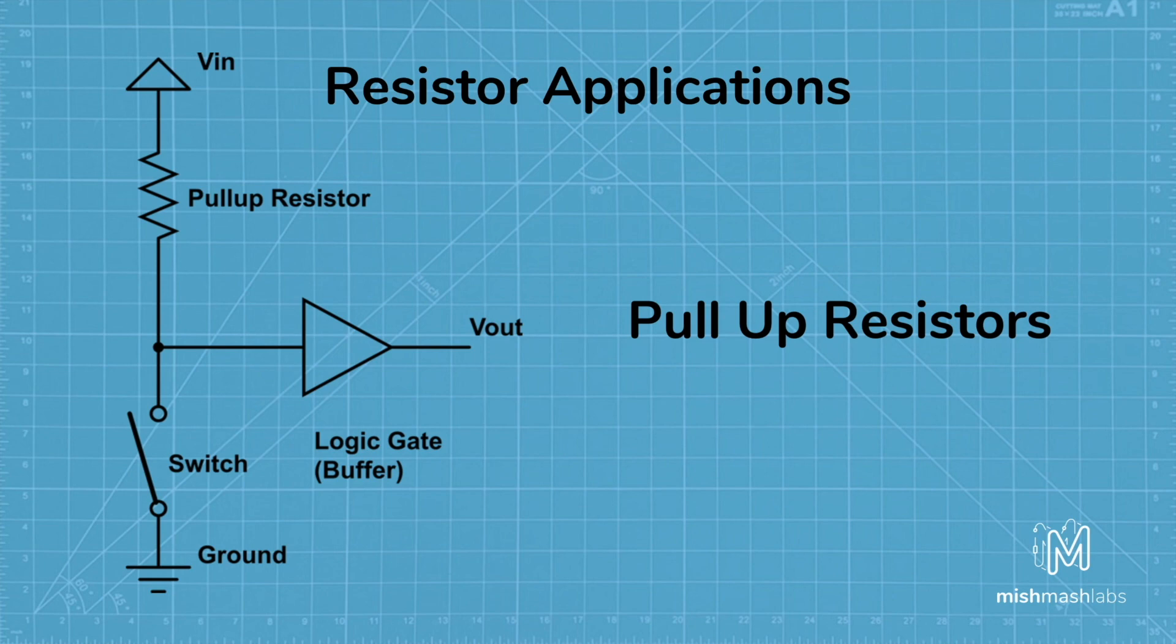Without a pull up resistor, inputs could be left floating, and there's no guarantee a floating pin is either high or low. In the example shown, as the switch is open, the input is pulled high, as the current flows through the pull up resistor from the voltage in. When the switch is closed, the input is pulled low, as the current flows through the path of least resistance from ground through the pull up resistor to the voltage in.